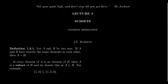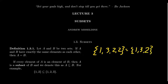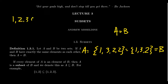We saw this in lecture two. We had an example like {1, 3, 2, 2} is equal to the set {1, 3, 2}. Let's call the first set A and the second set B. These two sets are actually equal to each other — A equals B — because 1, 2, and 3 belong to A, and 1, 2, and 3 also belong to B, and nothing else belongs to them. These two sets contain the exact same elements, so we say they're equal as sets.